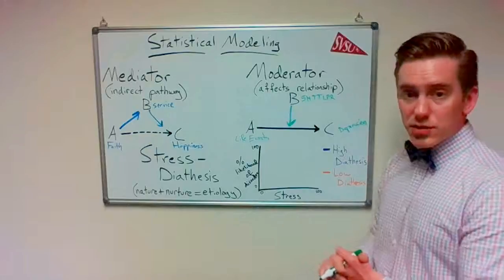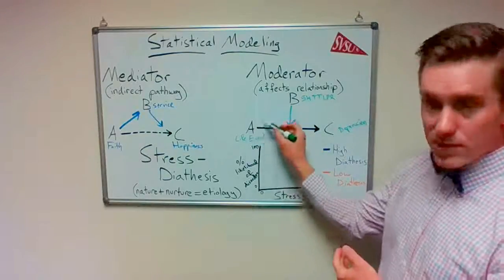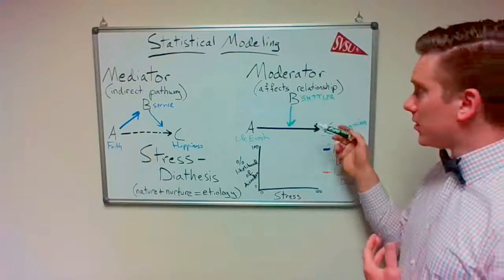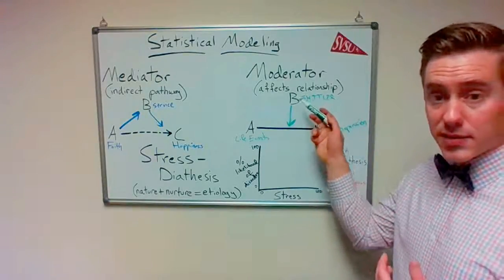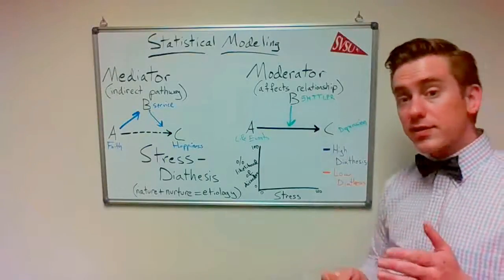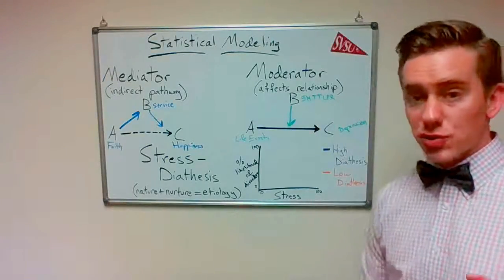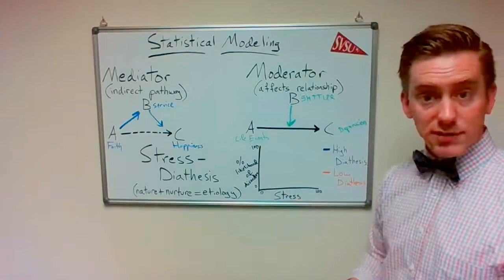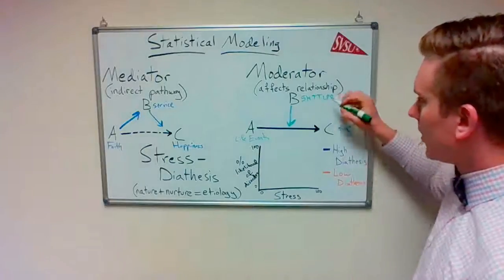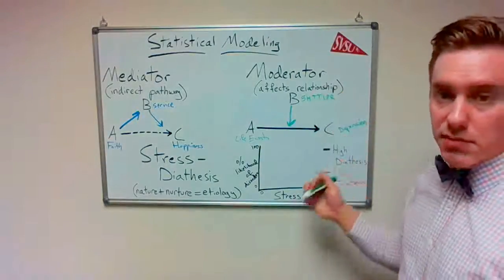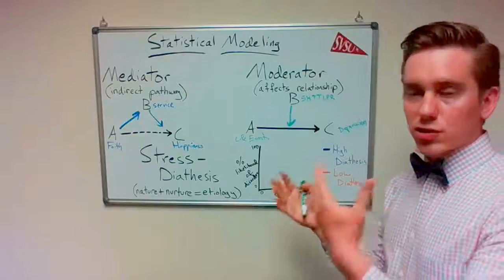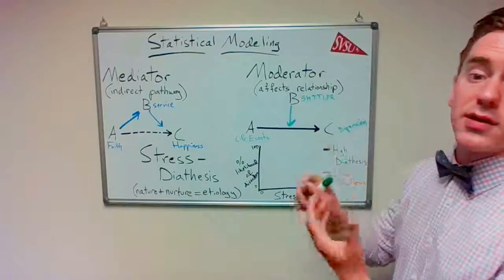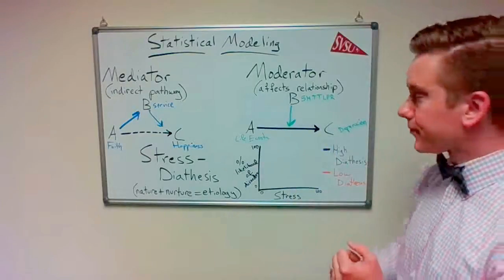The research shows that the correlation between number of difficult life events and depression is moderated by the phenotype that a person has on this gene. Specifically, those with the short short allele combo are more vulnerable to depressive episodes after stressful life events. It's a very clear moderator, right? In the short short population, this correlation is stronger than it is in the long long population.